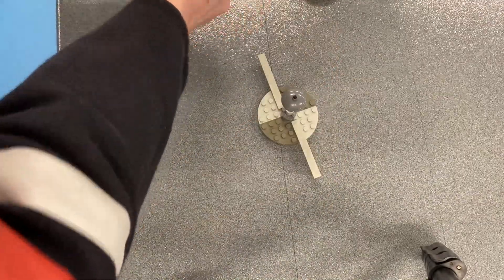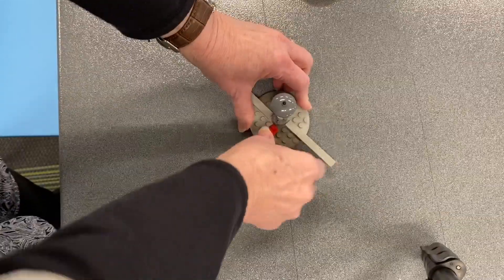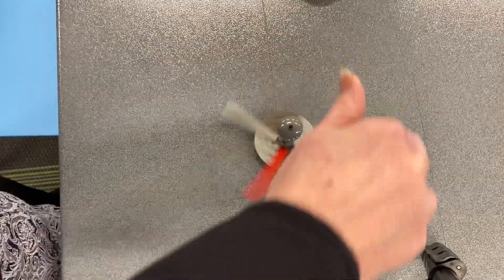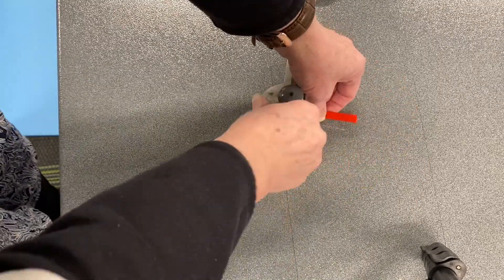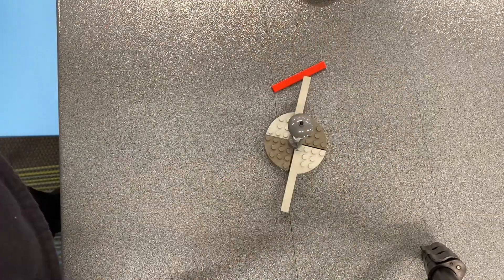You could also maybe add a red piece to give it a little color as it spins. It's not quite as even there. So that's a couple of fun things you can do with the tops.